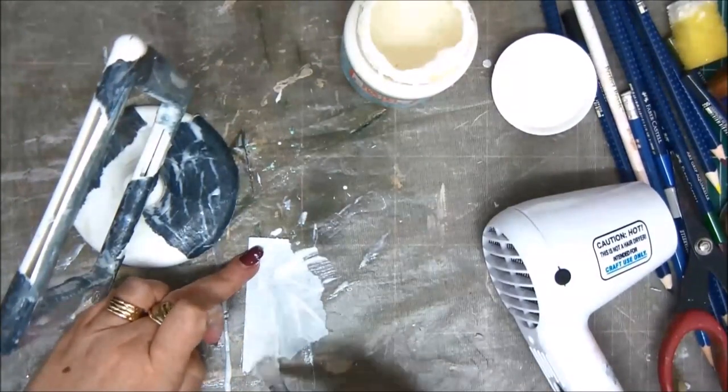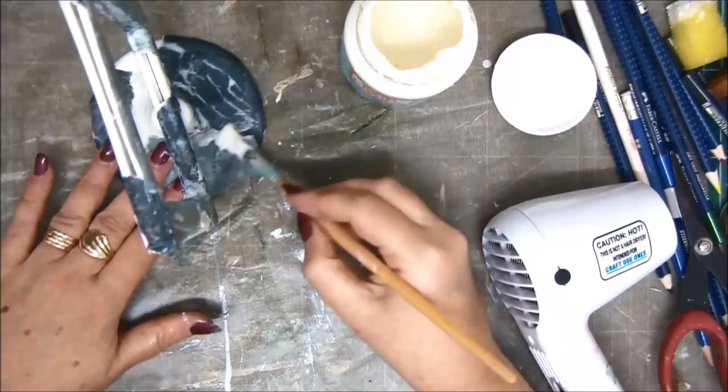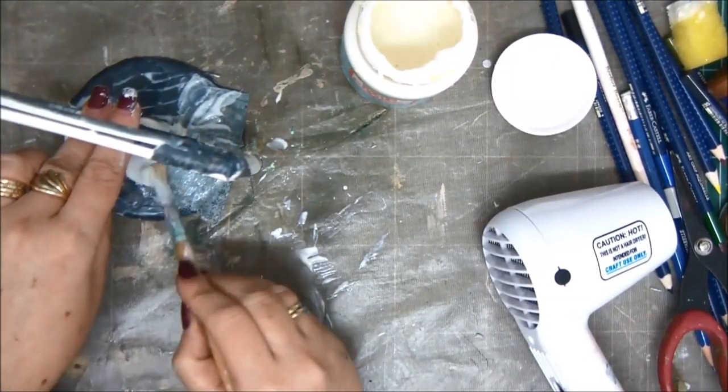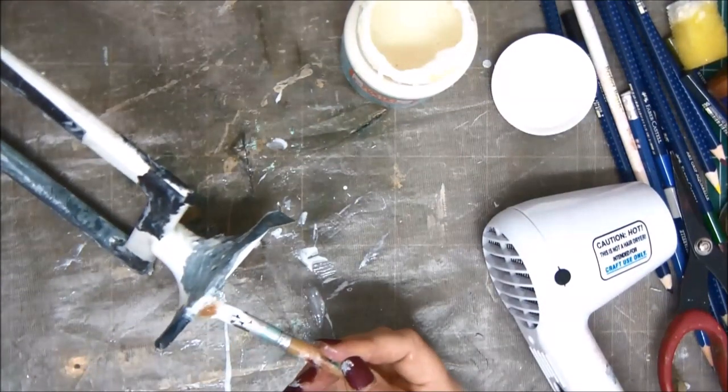But the paper is so thin that it wraps around especially the base really easily. So basically decoupaging a plastic frame is much easier than you think.